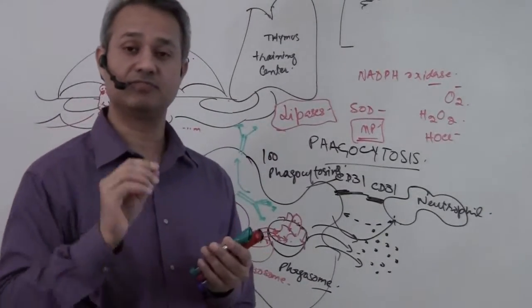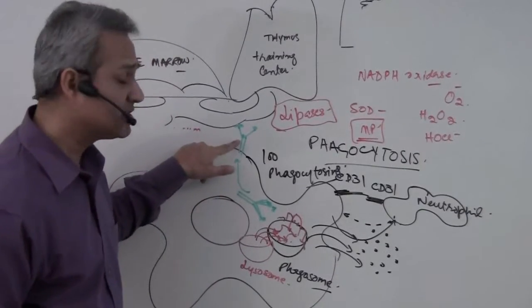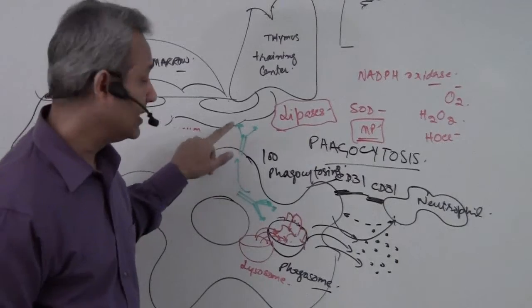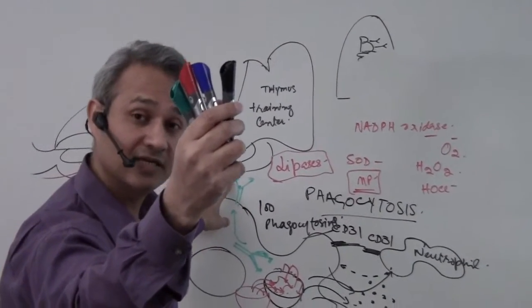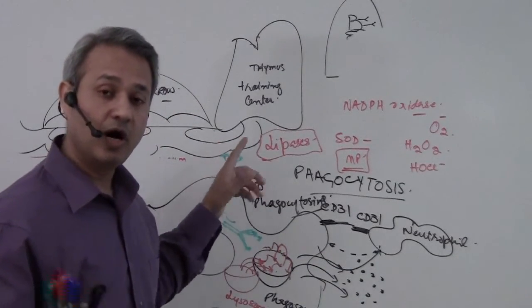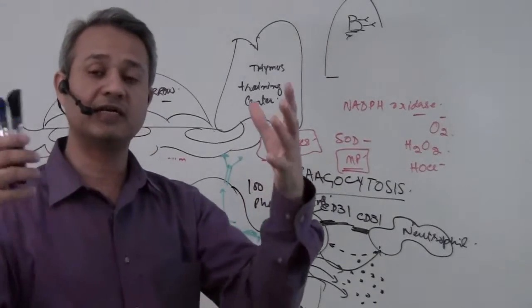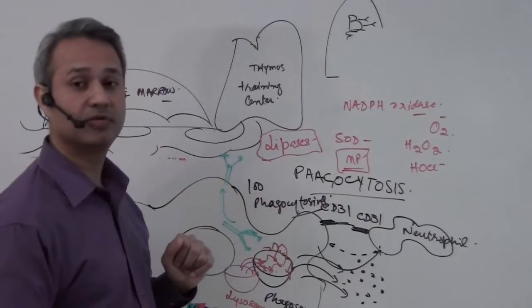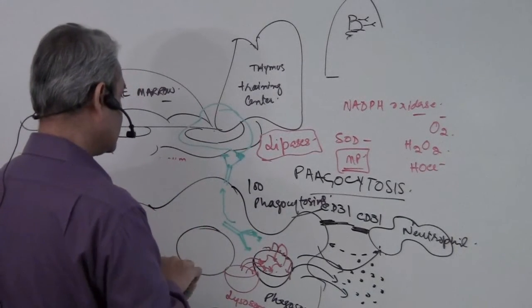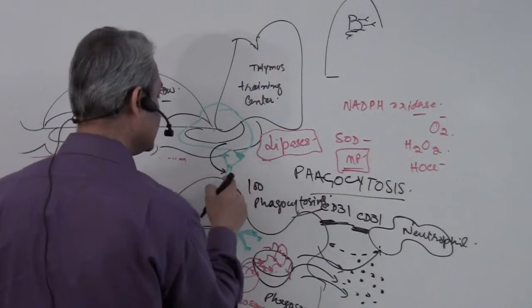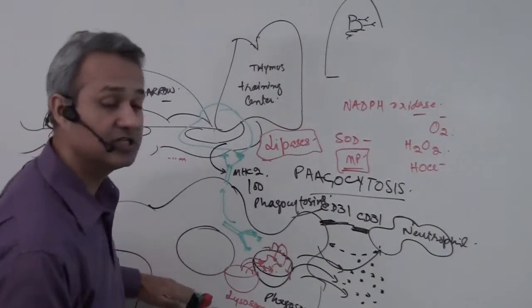This MHC 2 is really important. The macrophage is holding an antigen that is also part of the bacteria. How will our immune cells differentiate between the antigen held by the macrophage versus the antigen present on the surface of a bacteria? The difference is MHC 2. If an immune cell encounters this antigen, it will try to see if that antigen is present in combination with MHC 2.